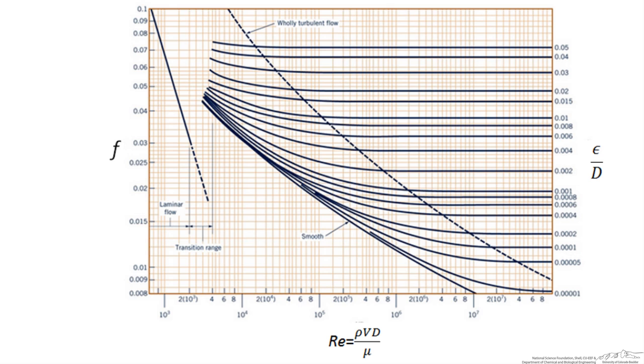Now this is the Moody diagram which tells us what the frictional factor f is based on the relative roughness in the pipe and the Reynolds number. We have the Reynolds number which we calculated as 2.8 times 10 to the 4th, which is roughly about right in here. Now the relative roughness is determined by the roughness of the pipe as well as the diameter of the pipe.